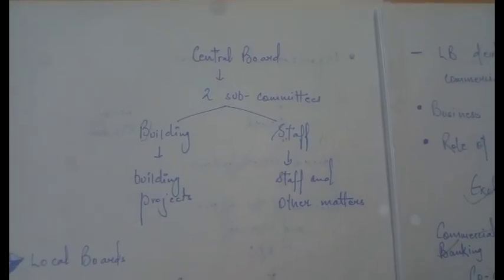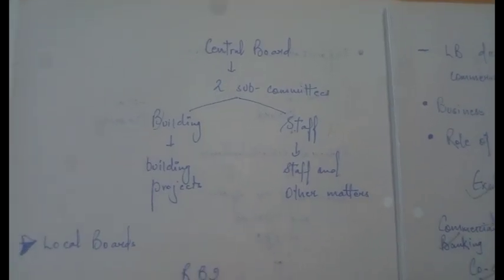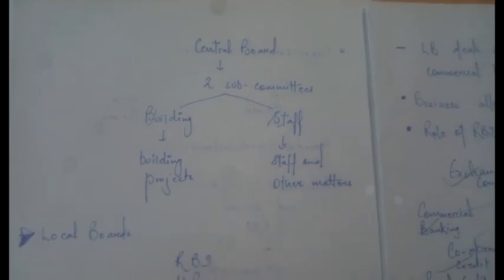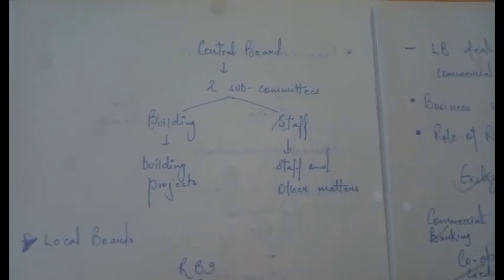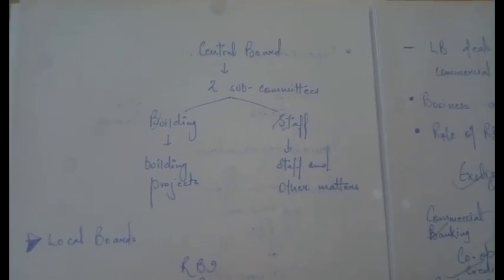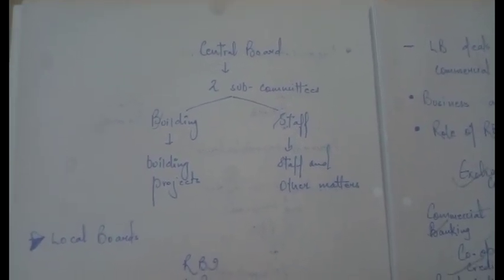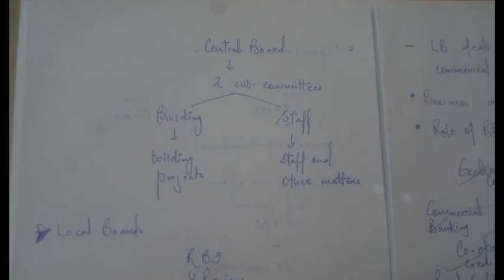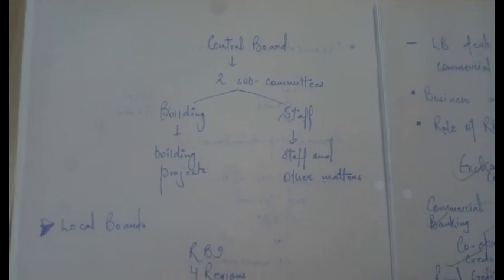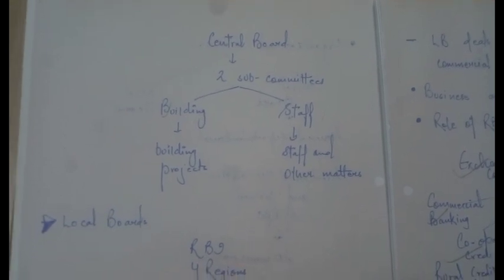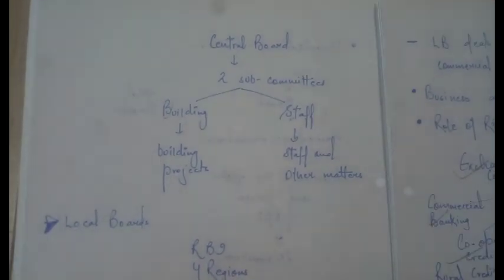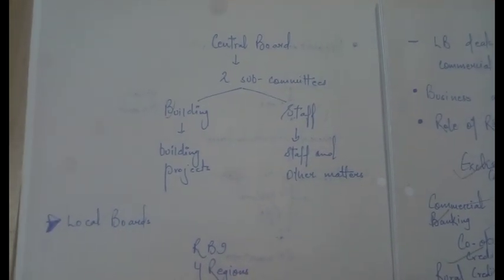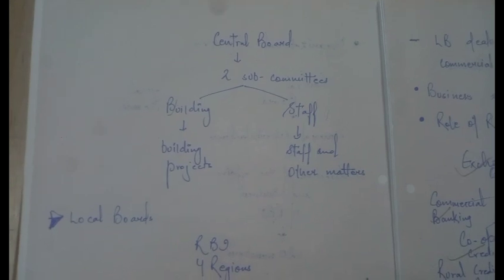The Central Board also has two subcommittees: the Building Subcommittee and the Staff Subcommittee. The Building Subcommittee's work is to look after building projects, while the Staff Subcommittee deals with staff and other related matters.